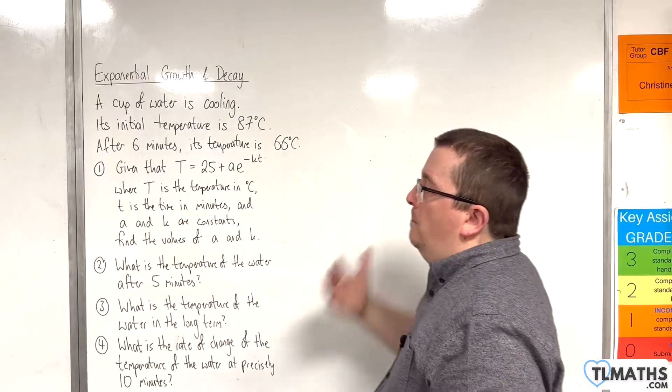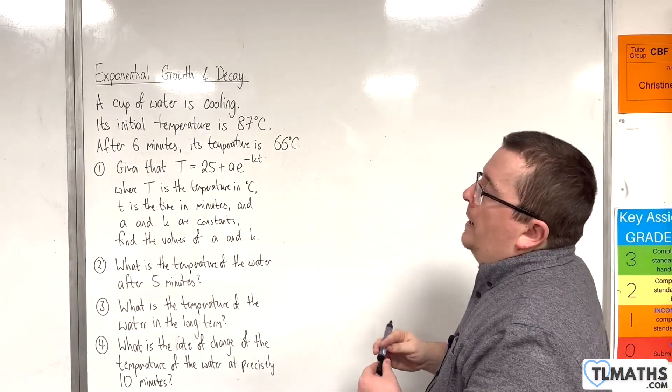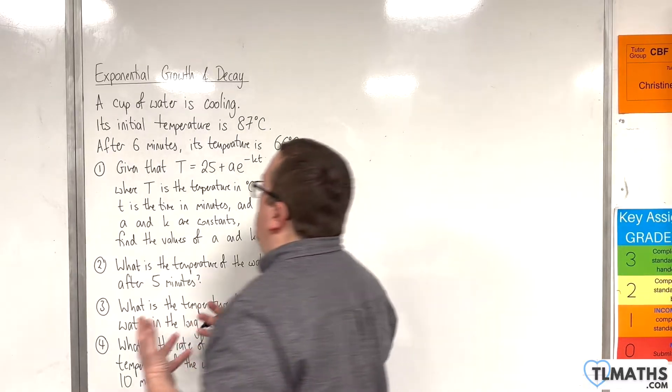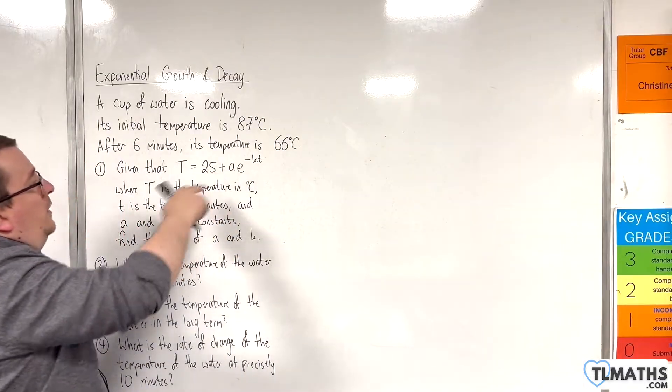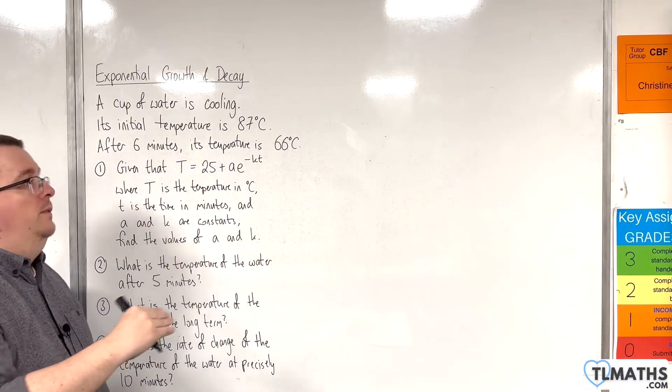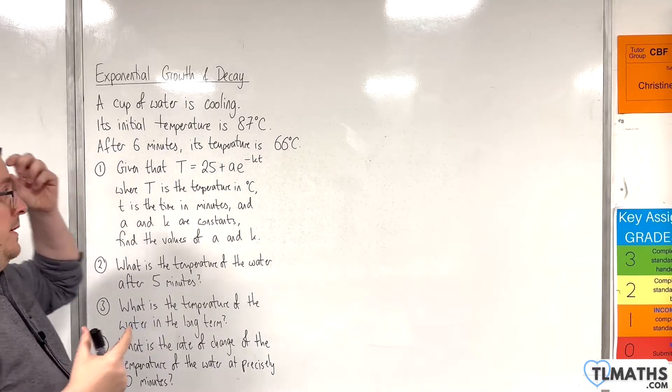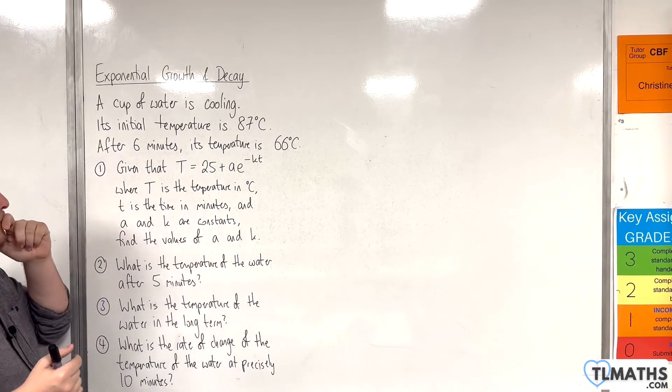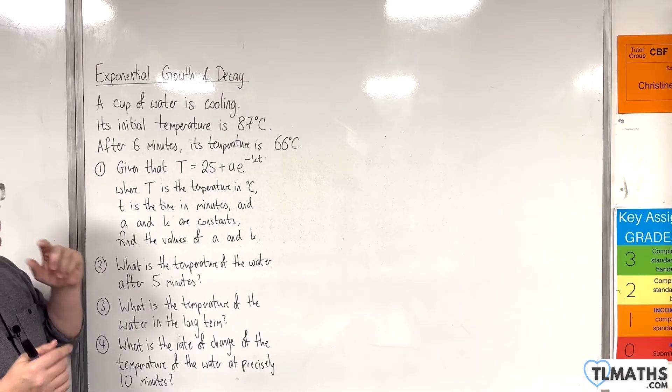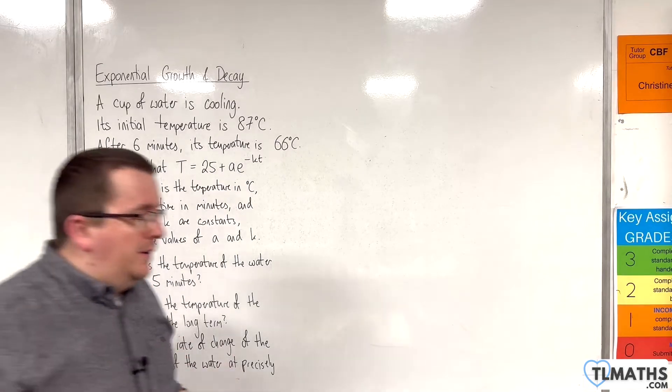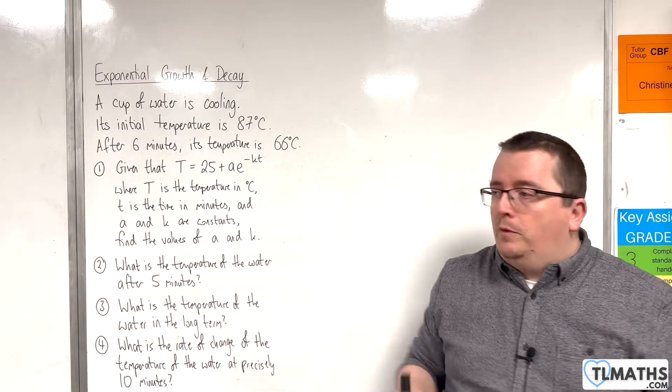So it is just a model. Because essentially you need to think that this would give a nice smooth curve, whereas temperature is likely to fluctuate in real life, depending on drafts that are coming in and if you've got the window open or something like that.